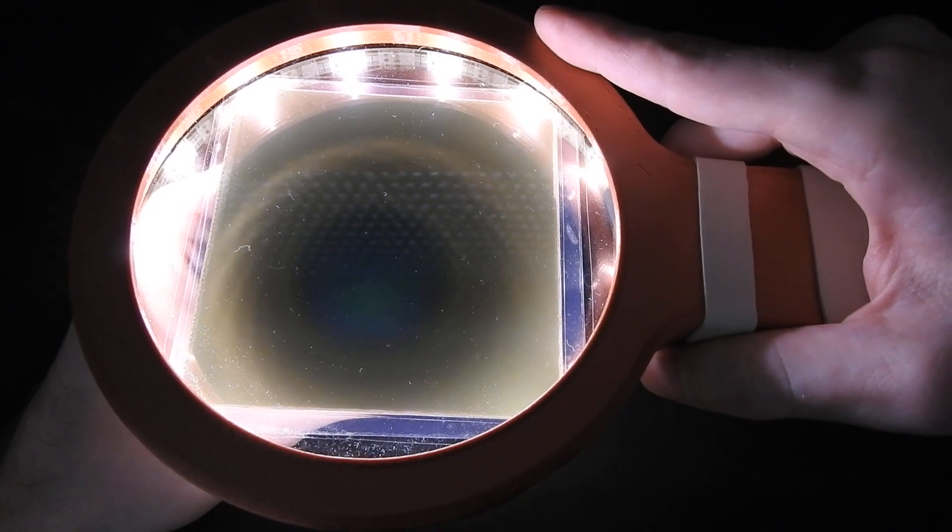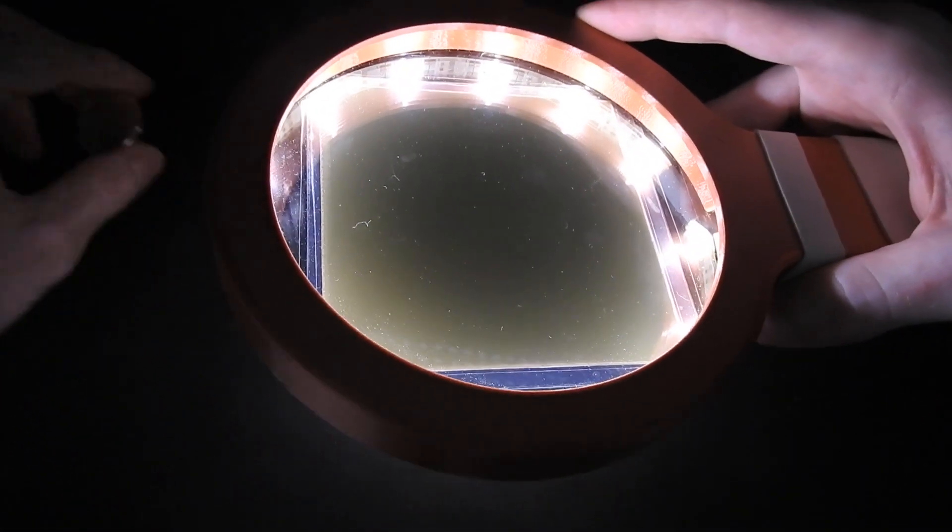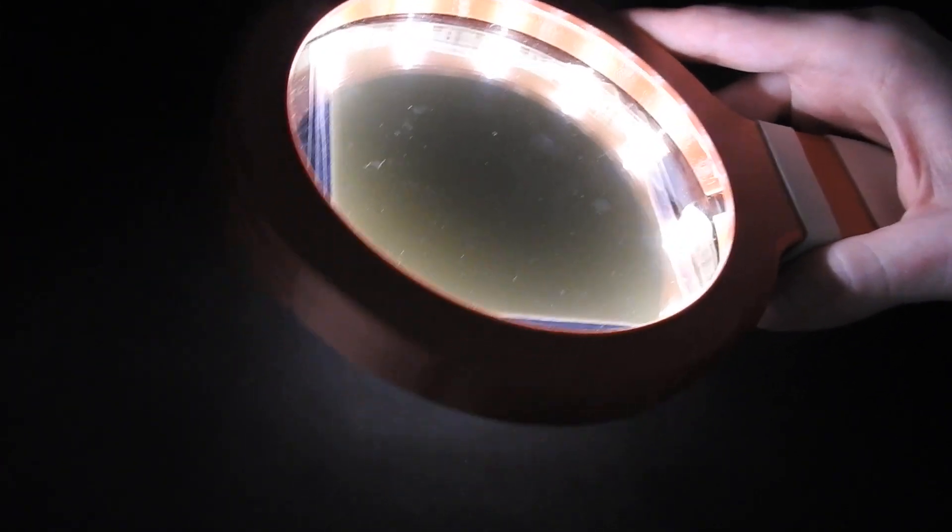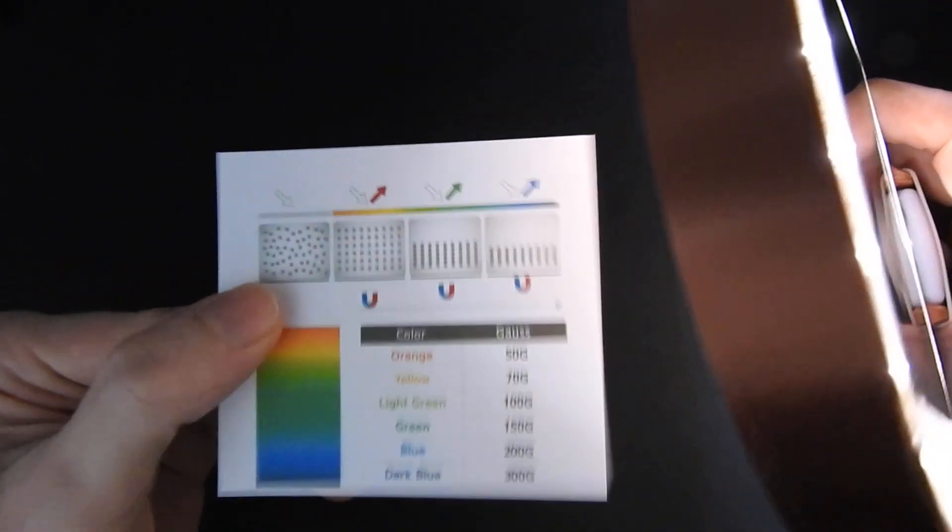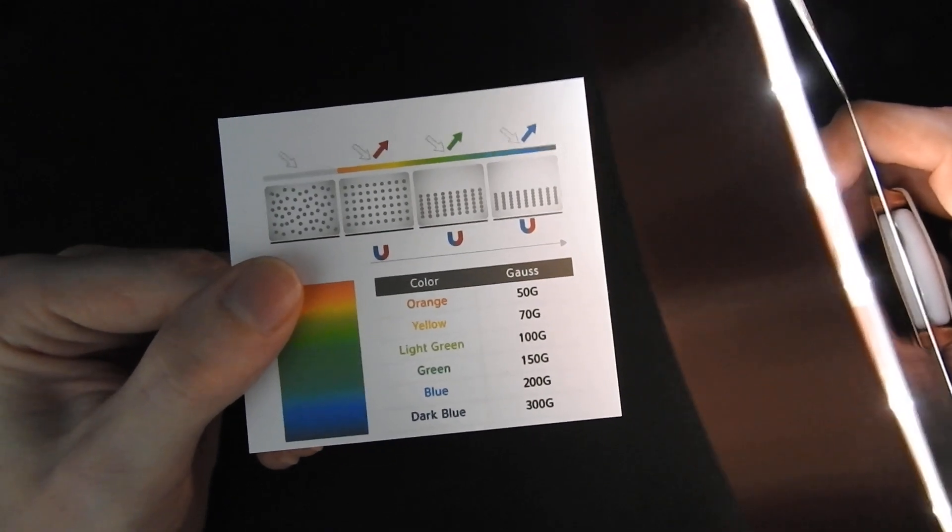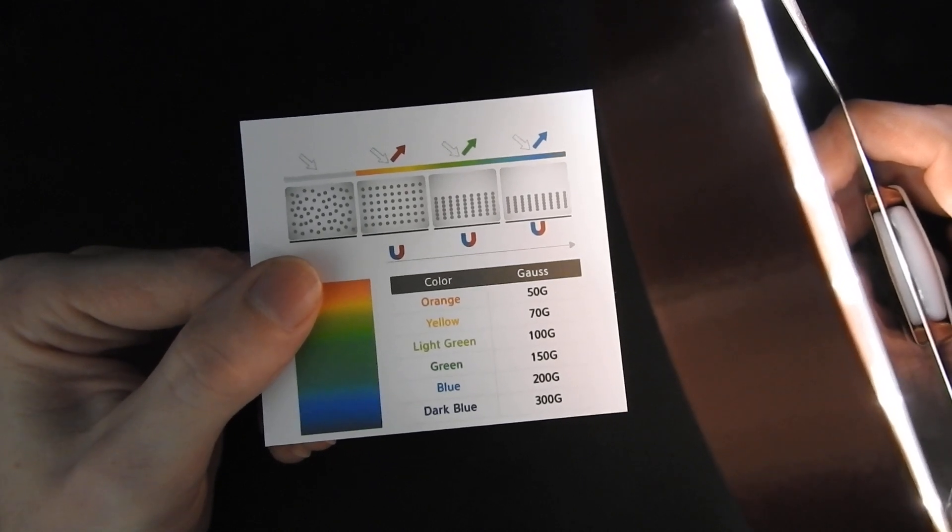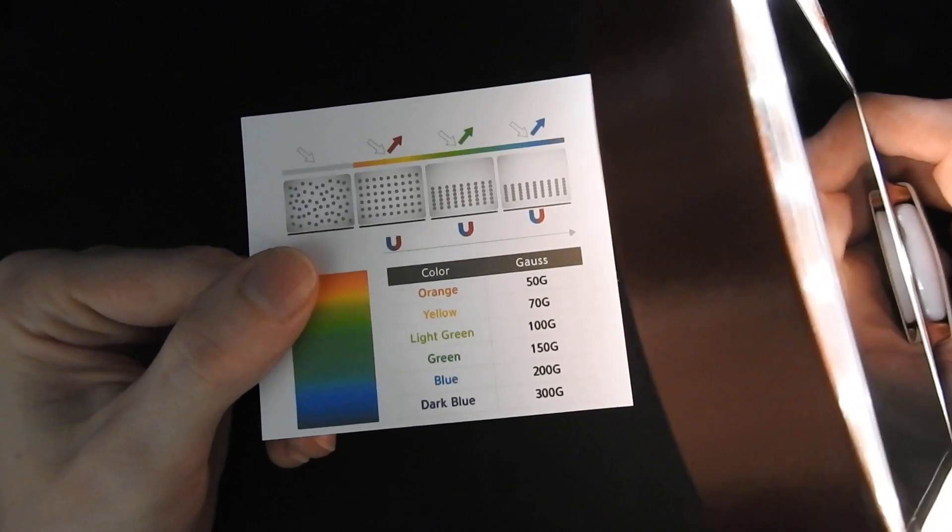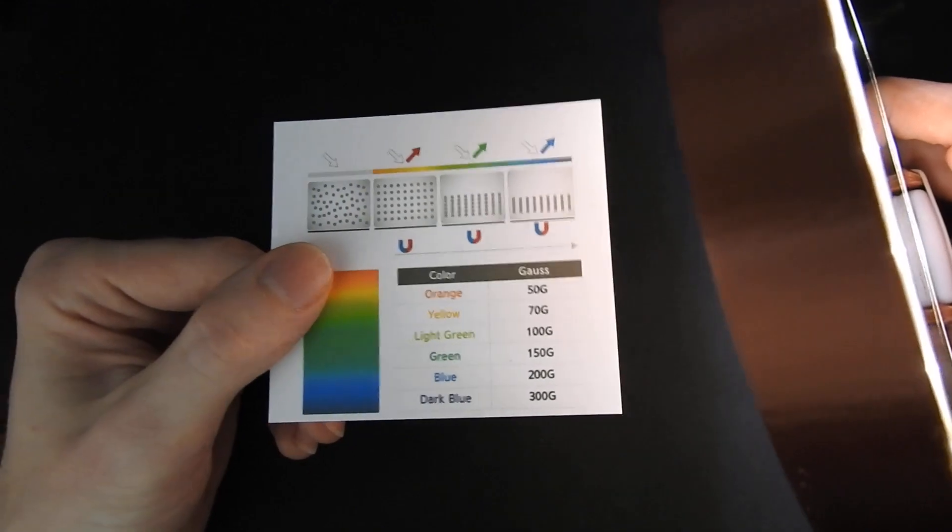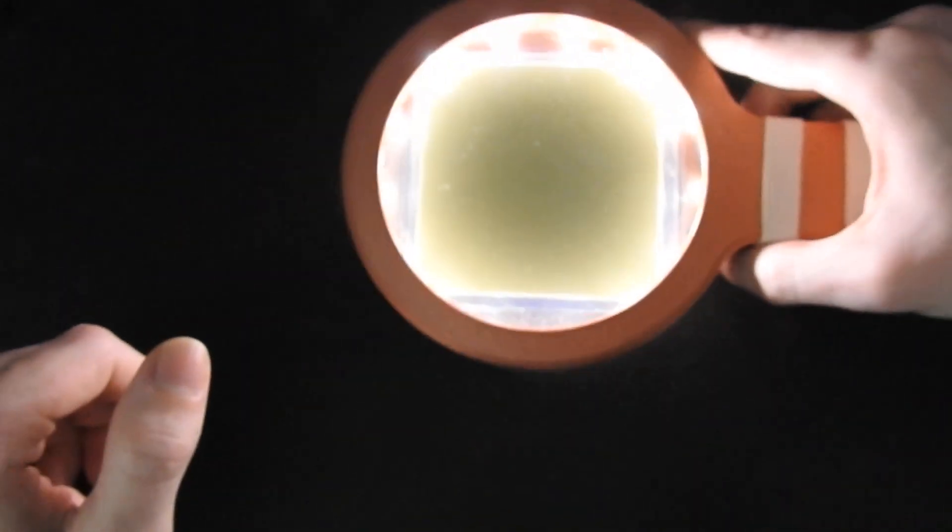These are different field strengths that are expressed in different colors. I will just show you quickly a chart from this field viewer. As you can see the lighter the color the weaker the gauss rating and the stronger the field the darker the color. This is just to give you an idea of how this field viewer works.